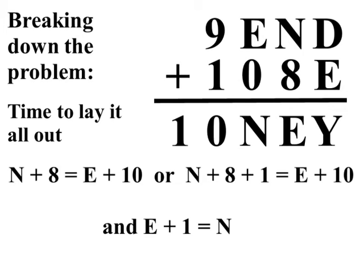We know that N plus 8 is greater than 10, so if the first column doesn't carry over, that gives us N plus 8 equals E plus 10. And if a 1 is carried, we get N plus 8 plus 1 equals E plus 10.